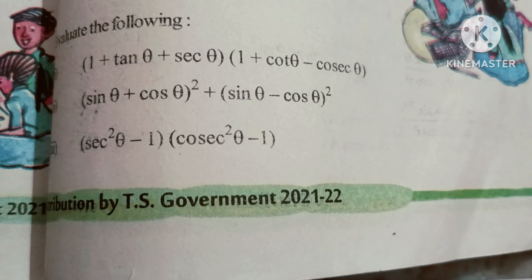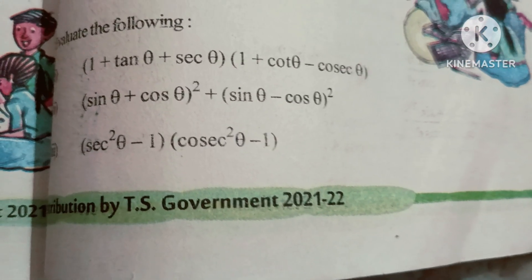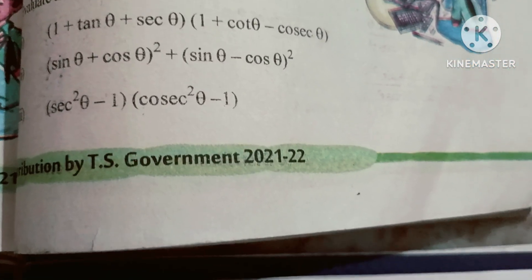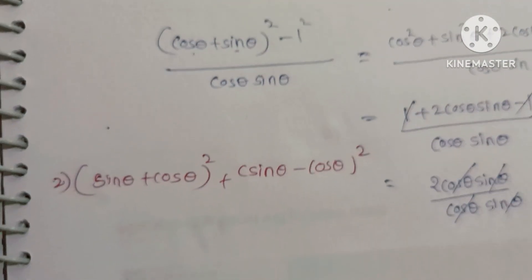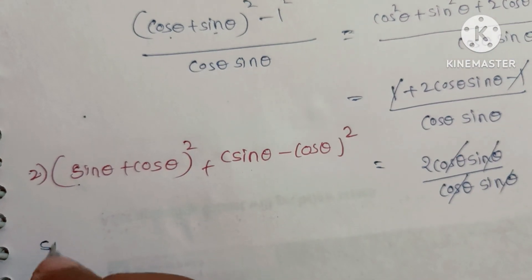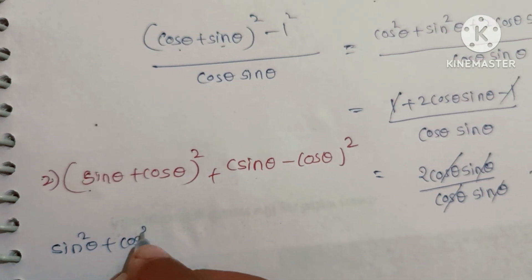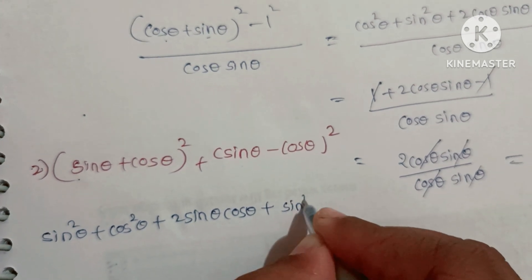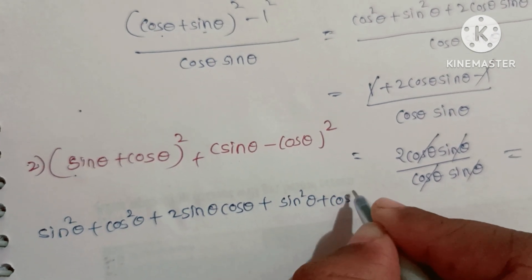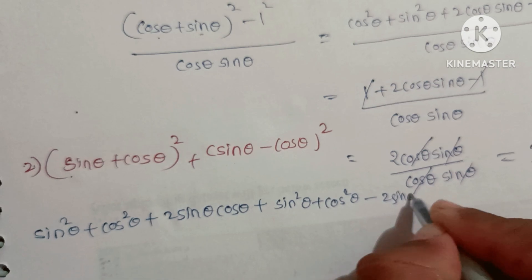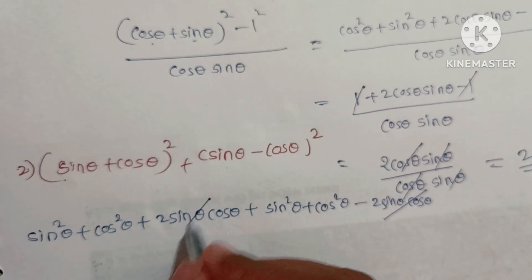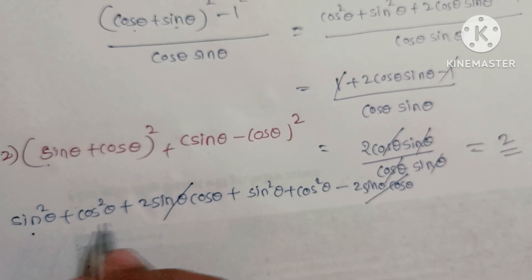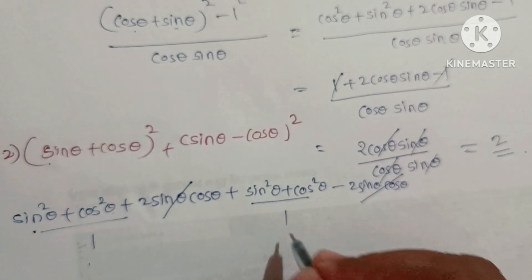Next question: (sinθ + cosθ)² + (sinθ - cosθ)². Expand using (a+b)² formula: sin²θ + cos²θ + 2sinθcosθ + sin²θ + cos²θ - 2sinθcosθ. The 2sinθcosθ terms cancel. So we get sin²θ + cos²θ + sin²θ + cos²θ = 1 + 1, and the answer is 2.